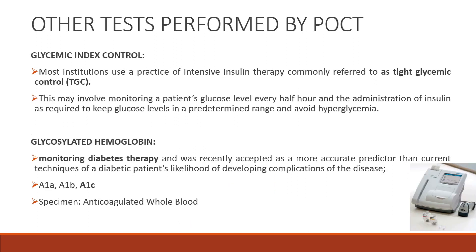Next is glycemic control. Most institutions use a practice of intensive insulin therapy commonly referred to as tight glycemic control or TGC. This involves monitoring a patient's glucose level every half hour and administering insulin as required to keep glucose levels in a predetermined range and avoid hyperglycemia. Glycosylated hemoglobin is used for monitoring diabetes therapy and was recently accepted as a more accurate predictor of a diabetic patient's likelihood of developing complications of the disease.